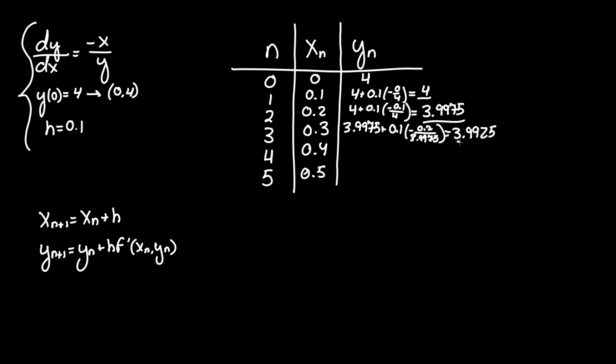So it is decreasing a little bit each time. Following the same pattern once more, 3.9925, which was the previous value of y, plus 0.1 times negative x of 3 is 0.3 over the new value of y which was 3.9925, gives us in the calculator 3.98498.